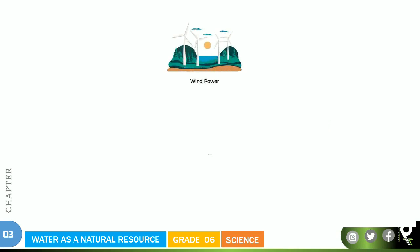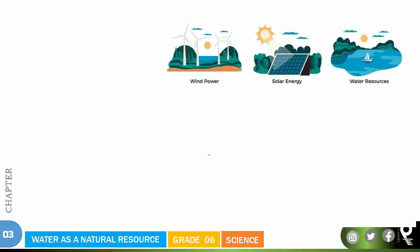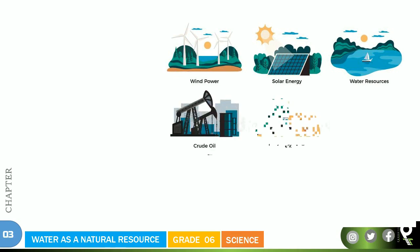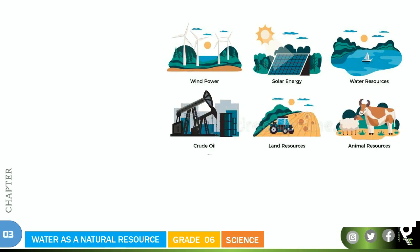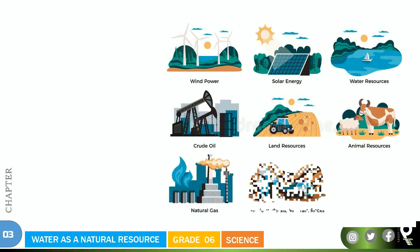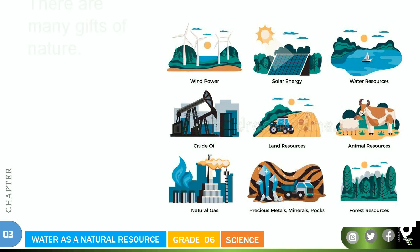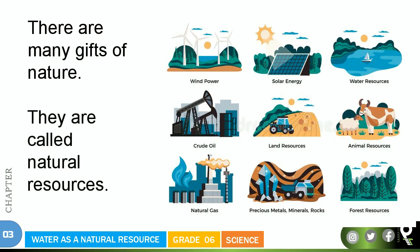Wind power, solar energy, water resources, crude oil, land resources, animal resources, natural gas, precious metals, minerals and rocks, and finally forest resources. There are many gifts of nature. These are all coming from nature and it is a gift. Now they are called natural resources.